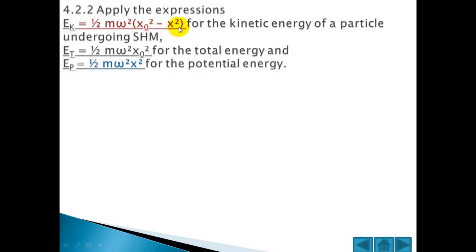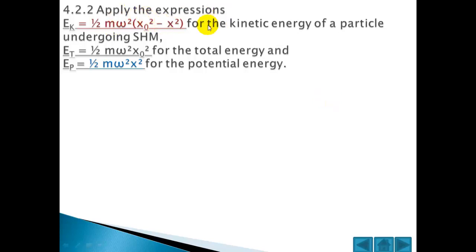These are the equations we need to express. The kinetic energy for a particle undergoing simple harmonic motion will be half m omega squared times (x₀² minus x²). This is derived from half mv squared — remember that v equals plus or minus omega times the square root of (x₀² minus x²), so squaring v gives us this. The total energy is half m omega squared x₀², and the potential energy is half m omega squared x².